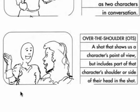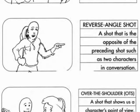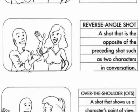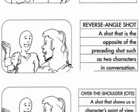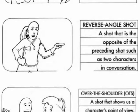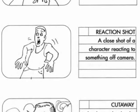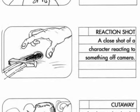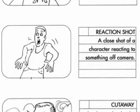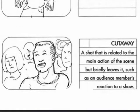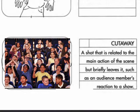From there, we would go to another over-the-shoulder shot or a reverse angle shot — a shot that is the opposite of the preceding shot, such as two characters in conversation. So you might get a two-shot, an over-the-shoulder shot, and a reverse angle shot — you see how that conversation begins to come to life. Next, we have the point of view shot, a shot from the character's point of view. And we have a reaction shot, a close shot of a character reacting to something off-camera. Usually you would see what the character is looking at, and then the reaction. A cutaway is a shot related to the main action of the scene but that briefly leaves it, such as an audience member's reaction to a show — like in movies such as Bring It On where we see the cheerleaders do something amazing and then the audience reacts.